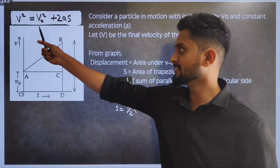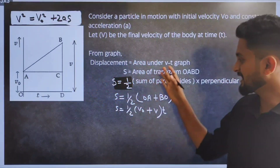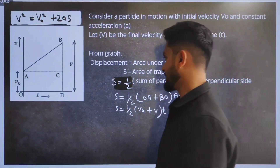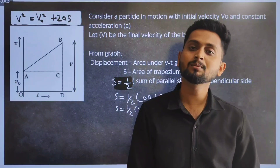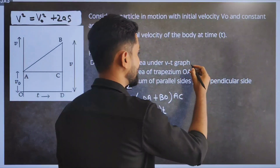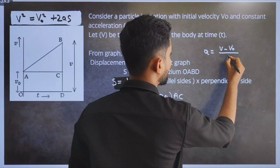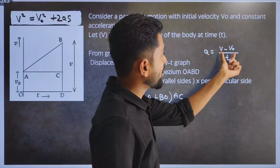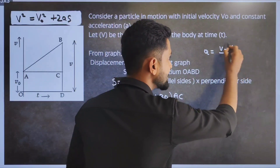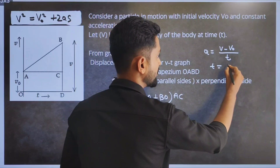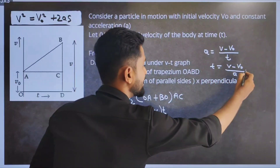The third kinematic equation is V² = V₀² + 2AS. For this derivation, we follow the same graph. We need to find the value of T. Acceleration is the rate of change of velocity: A = (V − V₀) / T. Rearranging for T: T = (V − V₀) / A. We substitute this expression for T into the displacement equation S = ½(V₀ + V) × T.